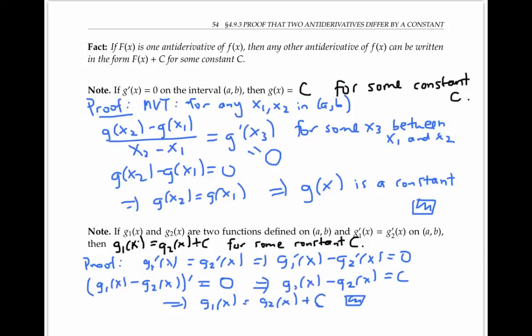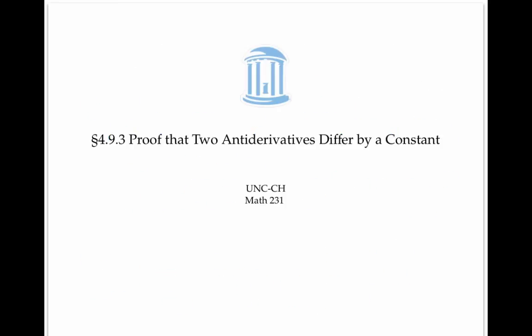So we've proved that any two functions with the same derivative have to differ by a constant. In other words, if F(x) is one antiderivative of a function, then any other antiderivative must be of the form F(x) plus C. This concludes the proof that any two antiderivatives of a particular function must differ by a constant.